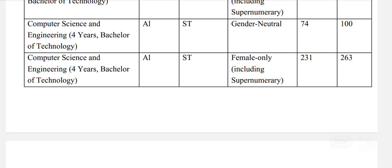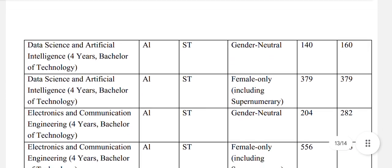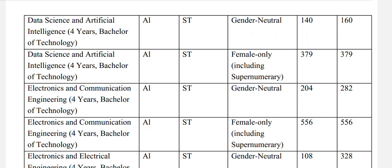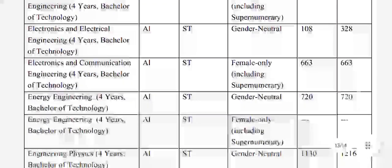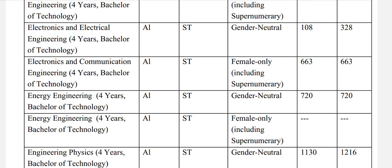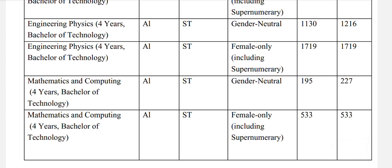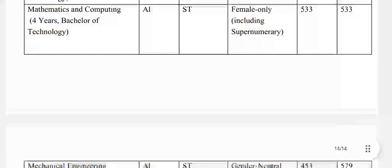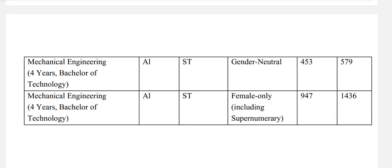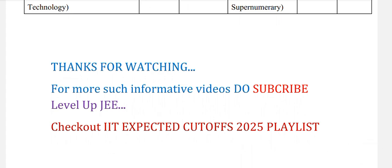Computer Science and Engineering, ST gender-neutral: 100, and ST female: 263. Data Science and Artificial Intelligence, ST gender-neutral: 160, and for females: 379. Electronics and Communication Engineering, ST gender-neutral: 282, and for females: 556. Electronics and Electrical Engineering, ST gender-neutral: 328. Energy Engineering, ST gender-neutral: 720. Engineering Physics, ST gender-neutral: 1216, and females: 1719. Mathematics and Computing, ST gender-neutral: 227. Mechanical Engineering, ST gender-neutral: 579.